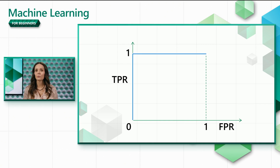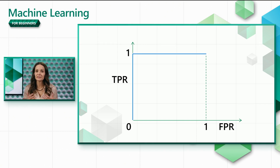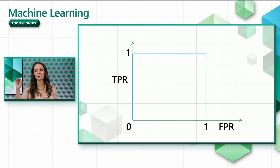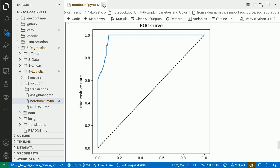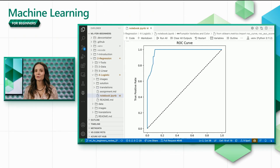What happens in between depends on how good your predictions are. Ideally, we want the true positive rate to be as close as possible to one and the false positive rate to be as close as possible to zero. So the ideal curve would go straight from (0, 0) to (0, 1) to (1, 1). It turns out that the ROC curve for our logistic regression model is pretty close to the ideal one. This confirms that we did a good job with data preparation and training.